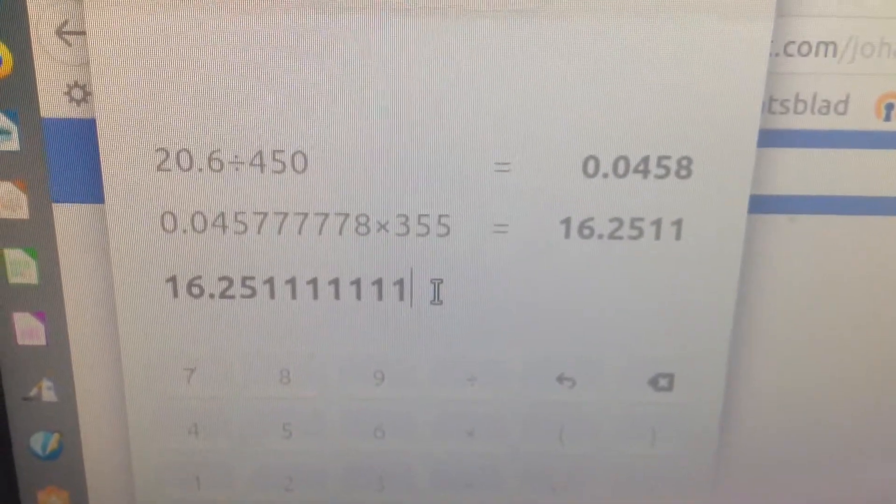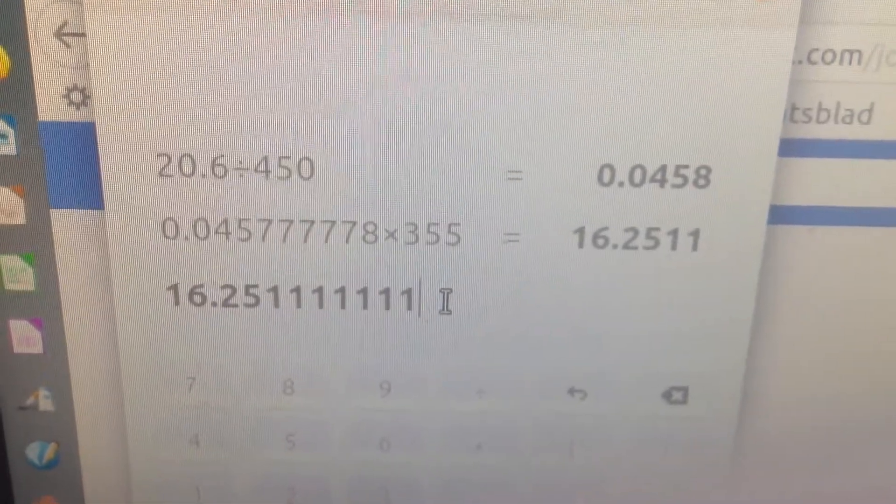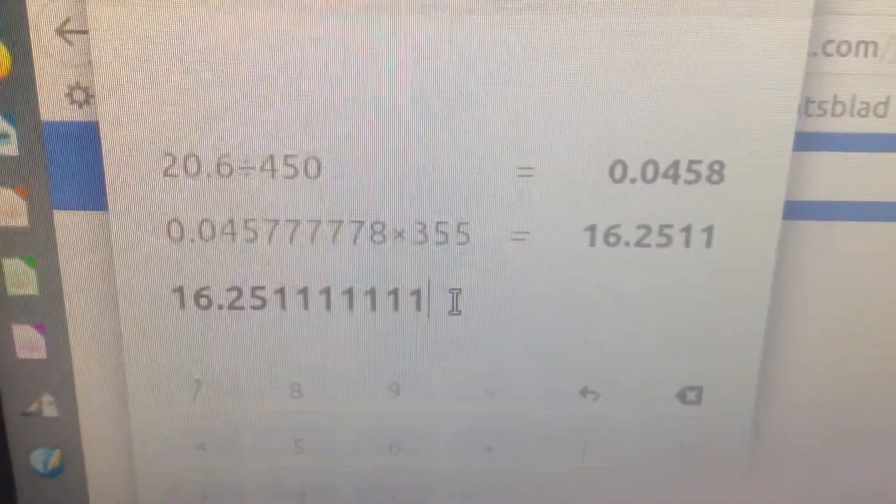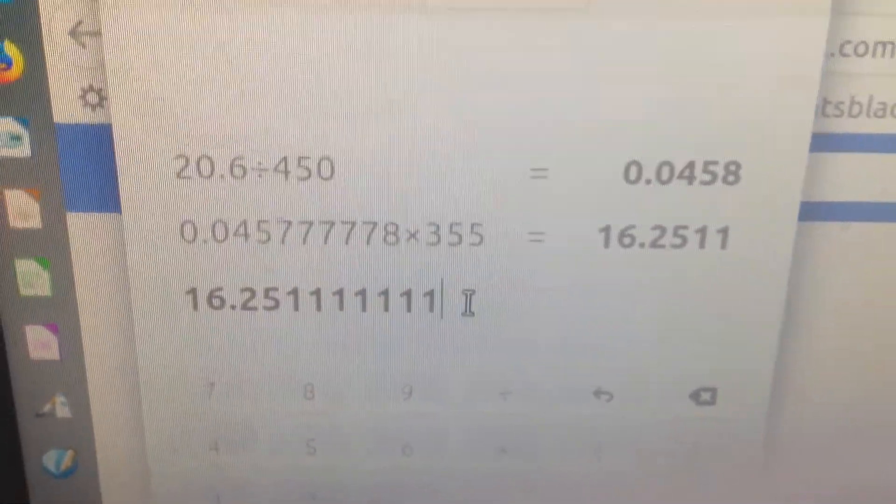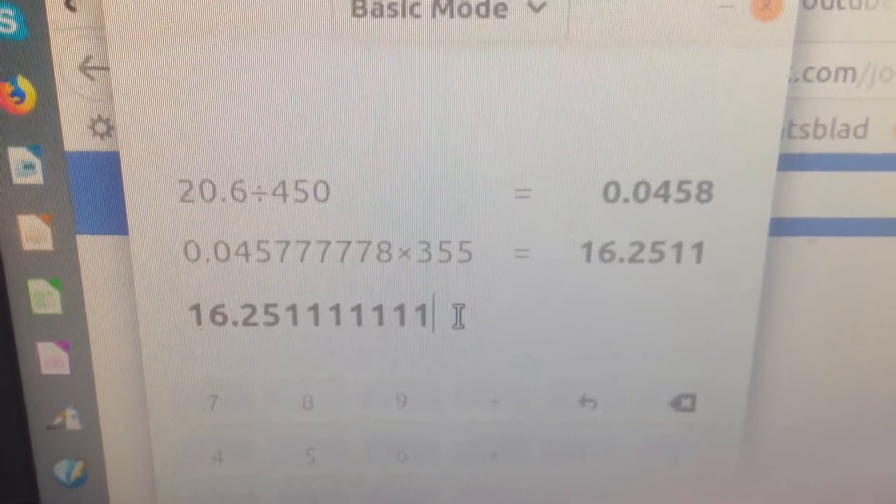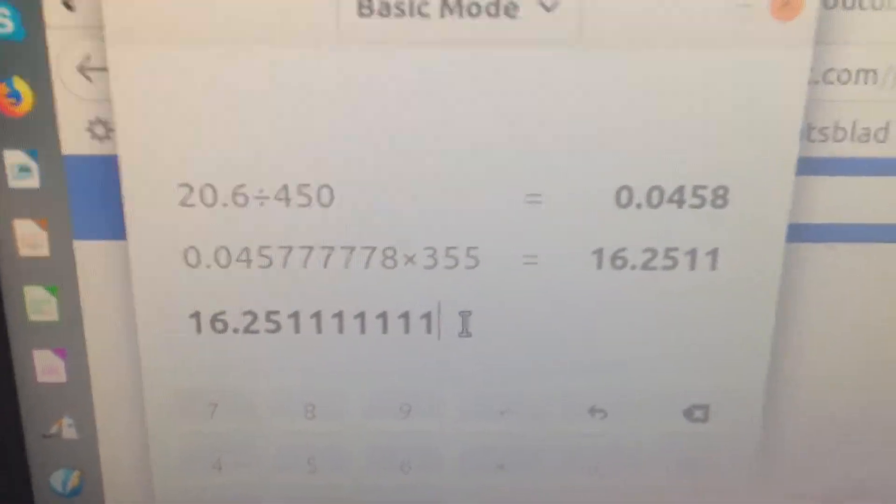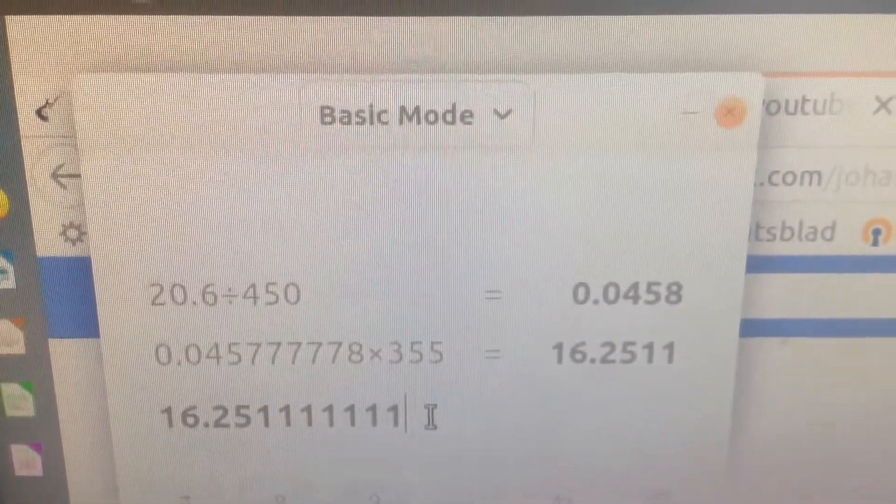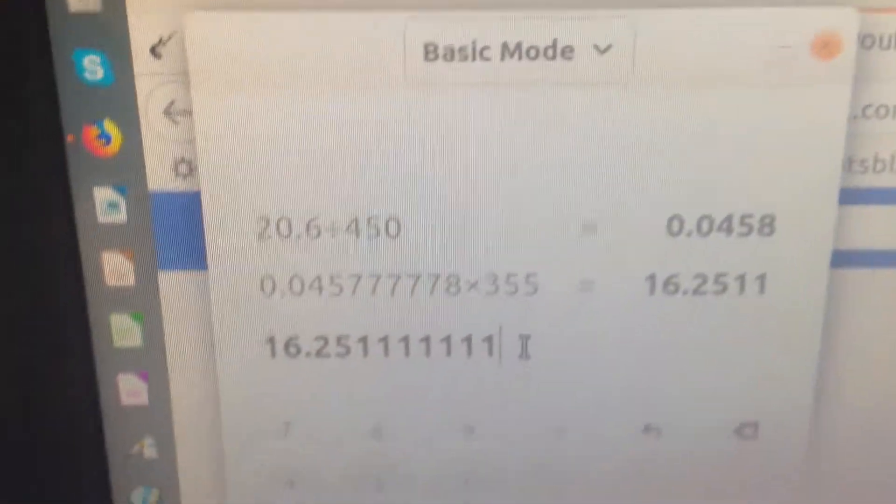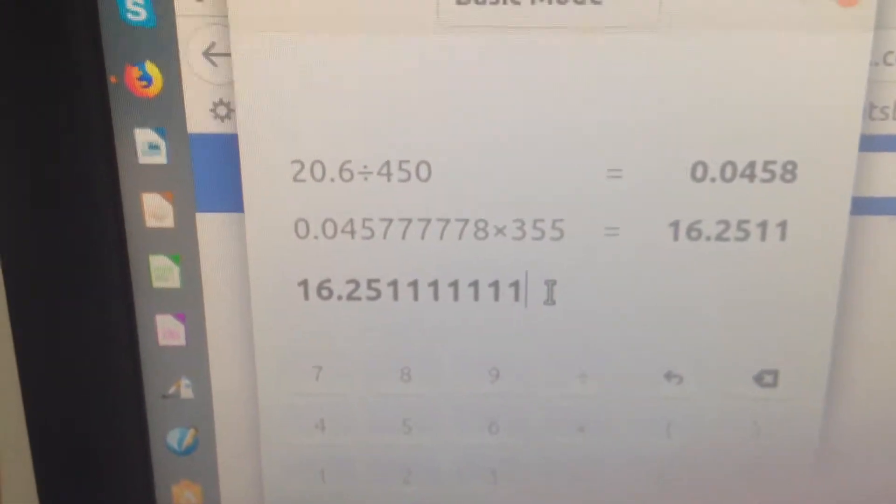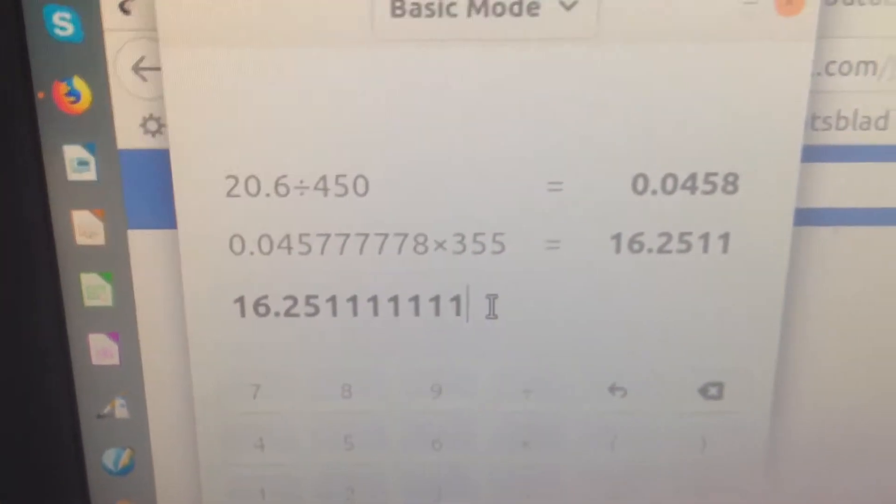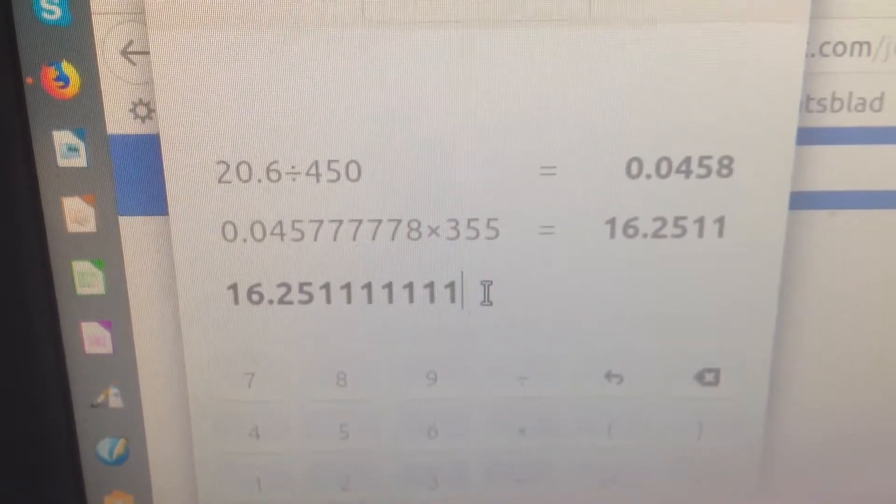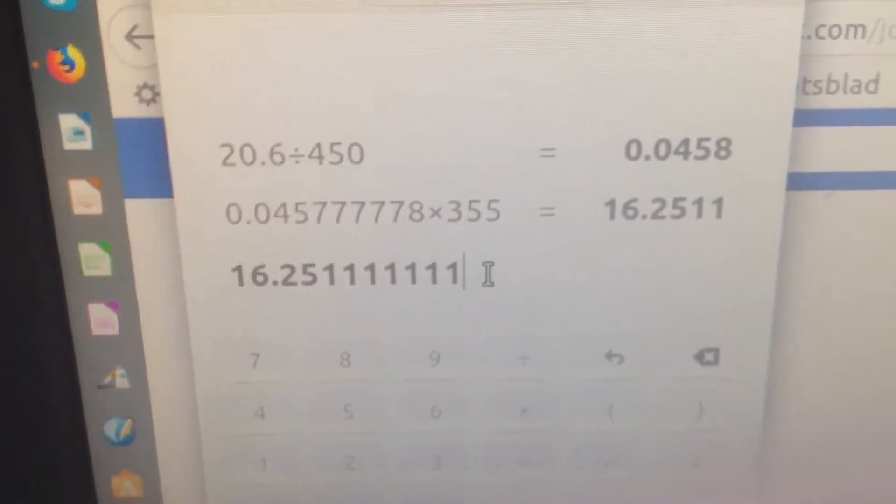The calculation for the plate dissipation: voltage drop was 20.6. If we divide it by 450 ohms, which is the actual value of the resistor, we get like 45 milliamps. The plate voltage is 375 minus the voltage drop or the voltage on the cathode is 355. 355 times the 45 milliampere is 16 watts.